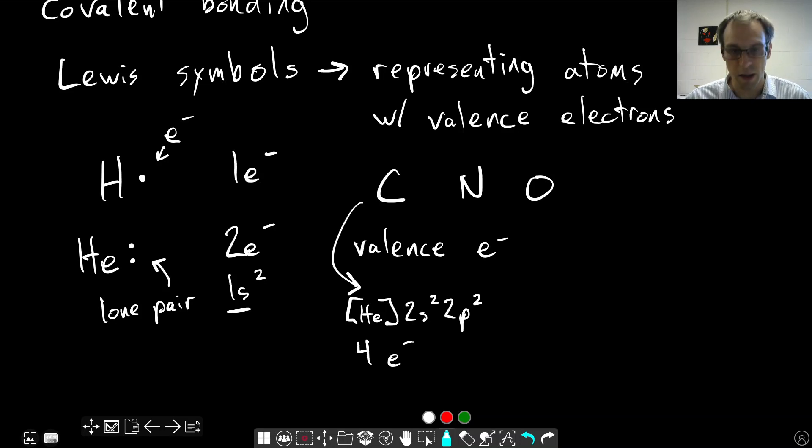And so the way we write the Lewis structure, or the Lewis symbol for carbon, is we write the atomic symbol. And we write dots around the four edges. So top, left, right, and bottom. And we write one dot on each side before we pair them up. So this is an exception. Helium is the exception here. But for everything else, you're always going to write the dots separately first. So carbon ends up with four single dots around it.